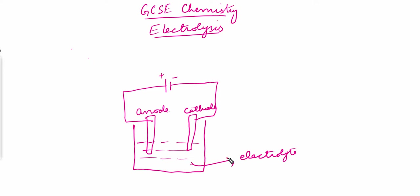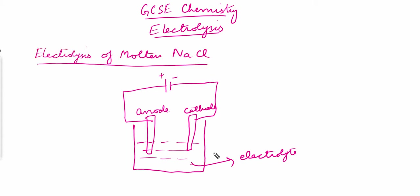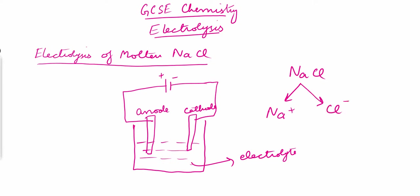Let's do an example to explain electrolysis. The first example is electrolysis of molten NaCl. Molten NaCl means the electrolyte contains sodium chloride in the molten form, so it has positive sodium ions (Na⁺) and negative chloride ions (Cl⁻) in the electrolytic solution.